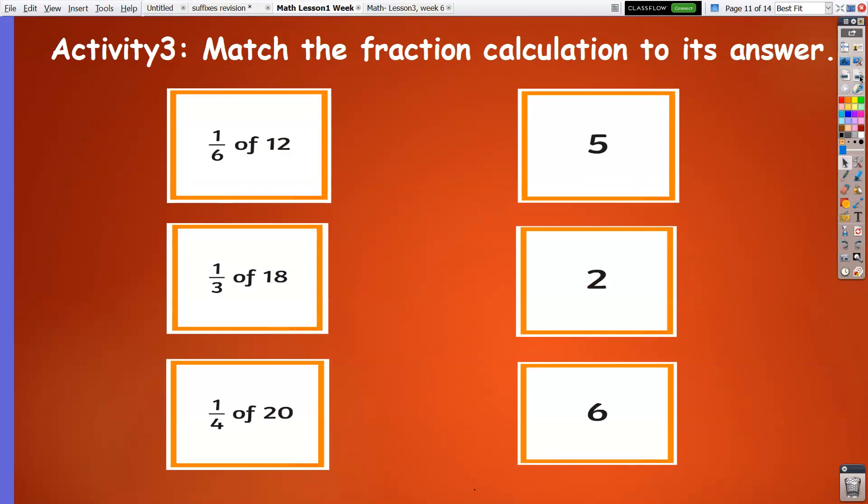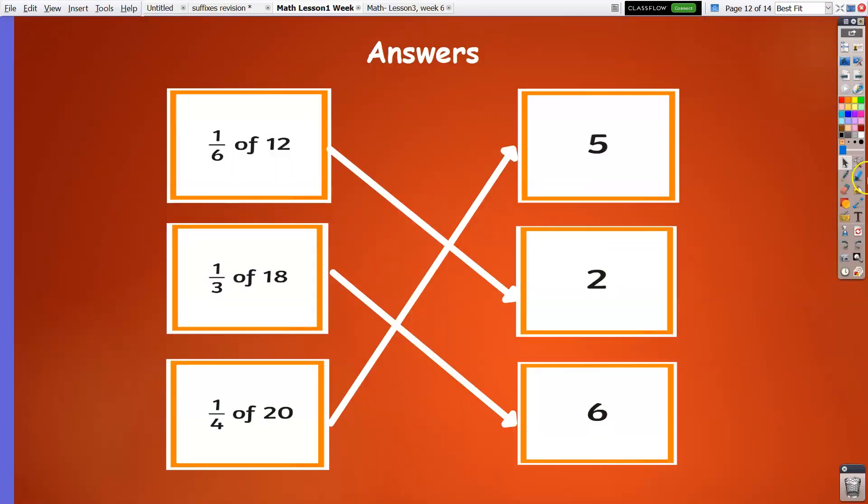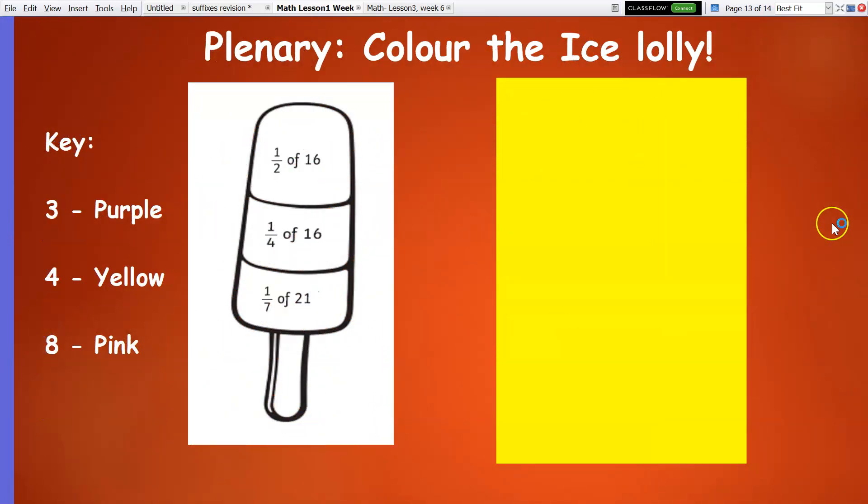Now, match the fraction calculation to its answer. Pause the video and do the activity. Time is up. Let's reveal the answers. So one-sixth of 12, or 12 divided by 6, is 2. One-third of 18 is 6, or 18 divided by 3. And one-fourth of 20 is 5, or 20 divided by 4 is 5.